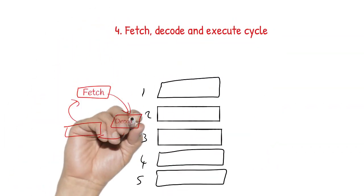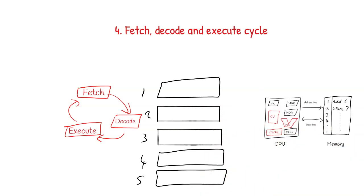The fetch, decode and execute cycle. The program counter contains the address of the next instruction to be fetched from memory. This is copied to the memory address register and then the value of the program counter can be incremented so it will point to the next instruction to be fetched. The address in the memory address register is then put onto the address bus to be sent to the memory.